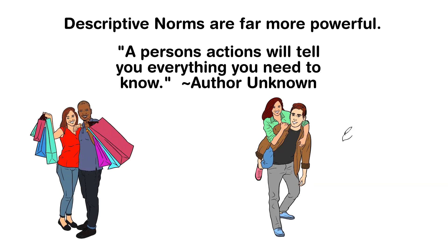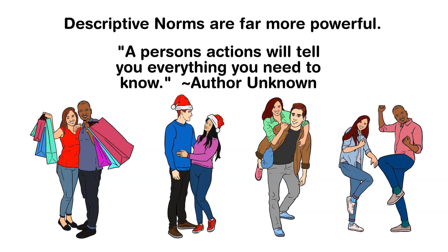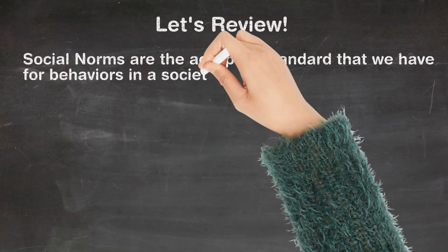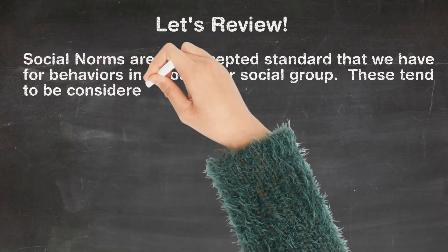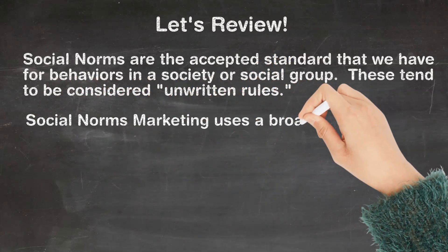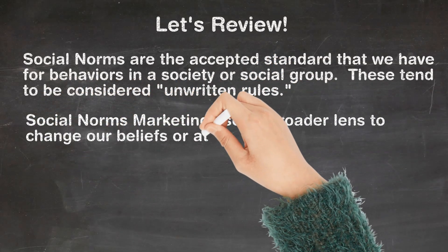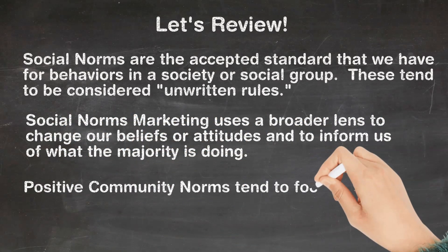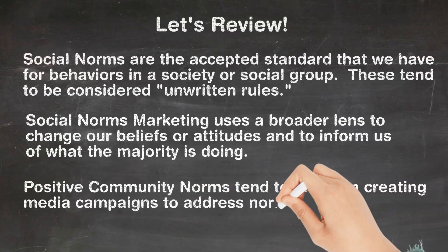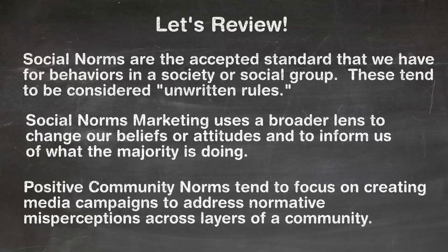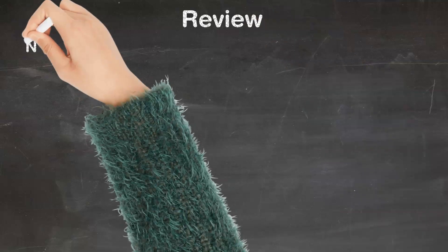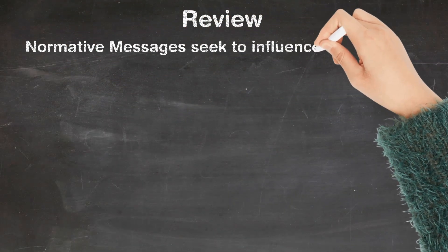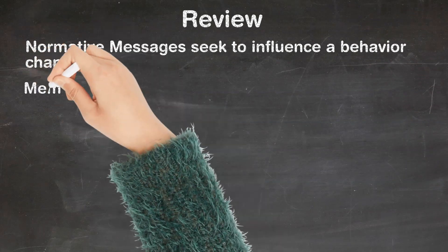So let's take a moment to review. Social norms are simply the accepted standards that we have for behavior within society or a group, and they tend to be what we consider unwritten rules. Social norms marketing uses a broader lens to change our beliefs or attitudes to inform us of what the majority is doing. Positive community norms tend to focus on creating media campaigns to address normative misperceptions across layers of a community. Normative messages seek to influence a behavior change — the goal is to get people to conform so they feel liked or accepted by their peers.